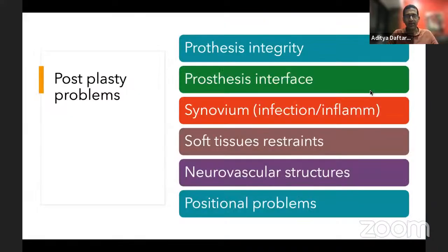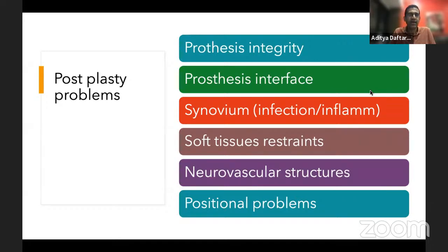We want to look at the prosthesis integrity, the interface between the bone and the prosthesis, the synovium, the soft tissue restraints, the neurovascular structures, and positional abnormalities.